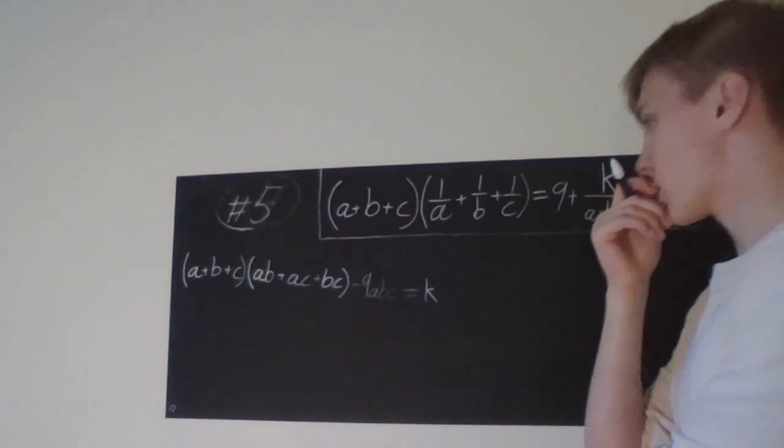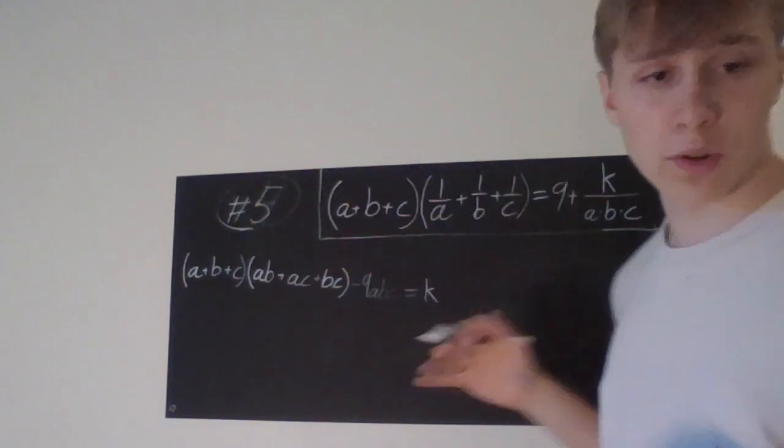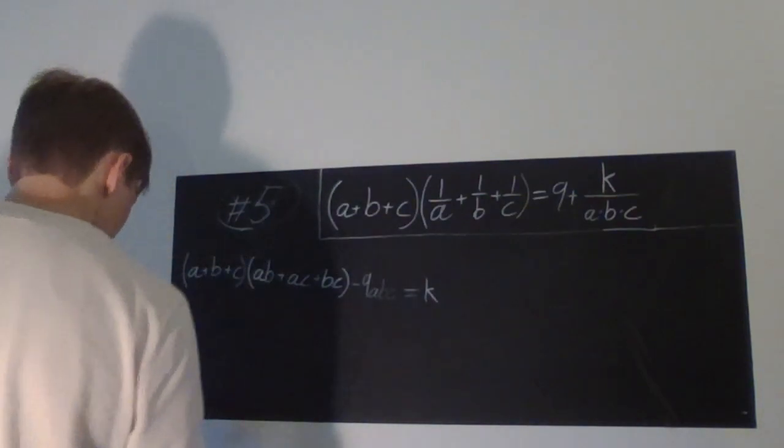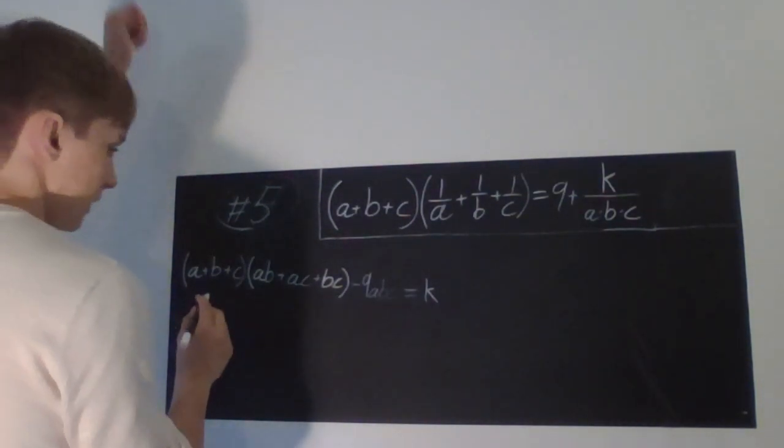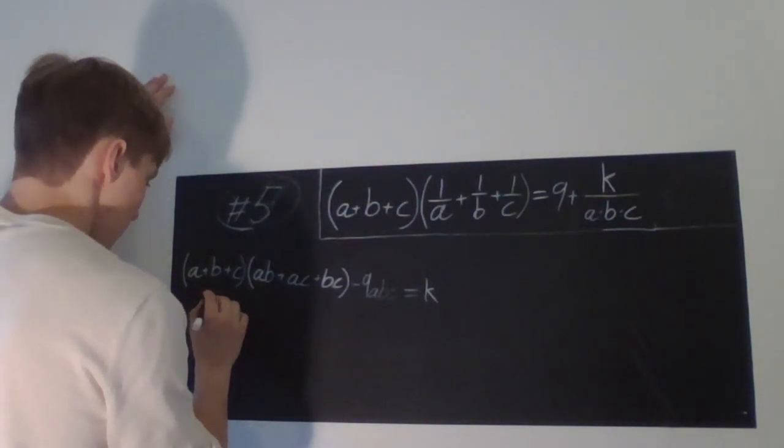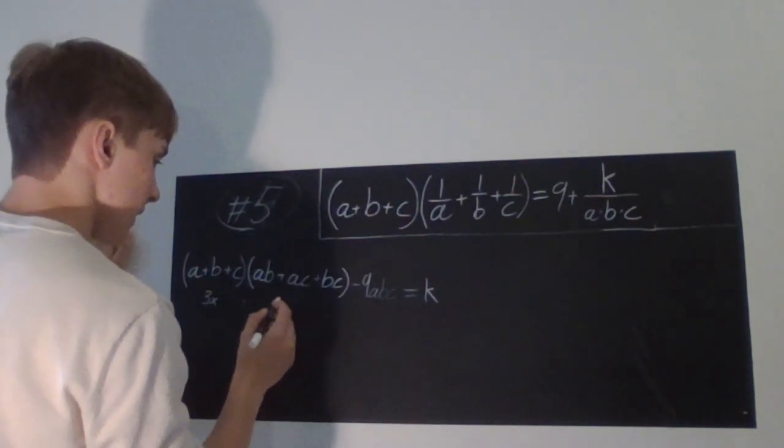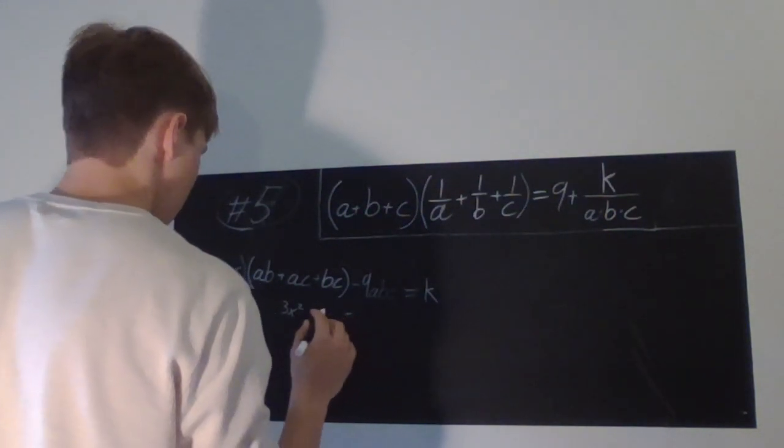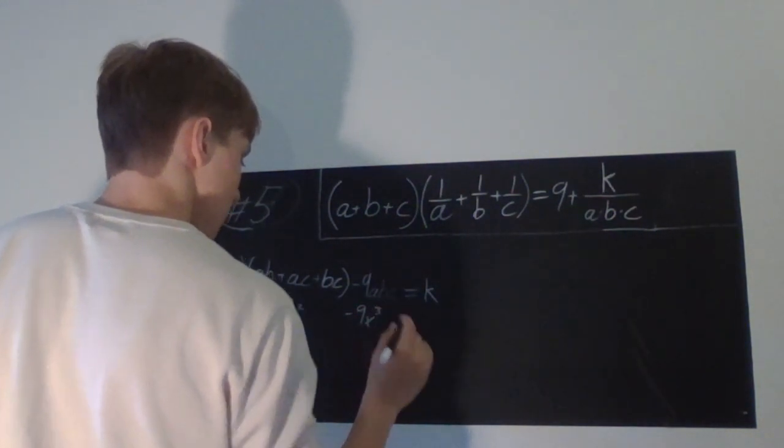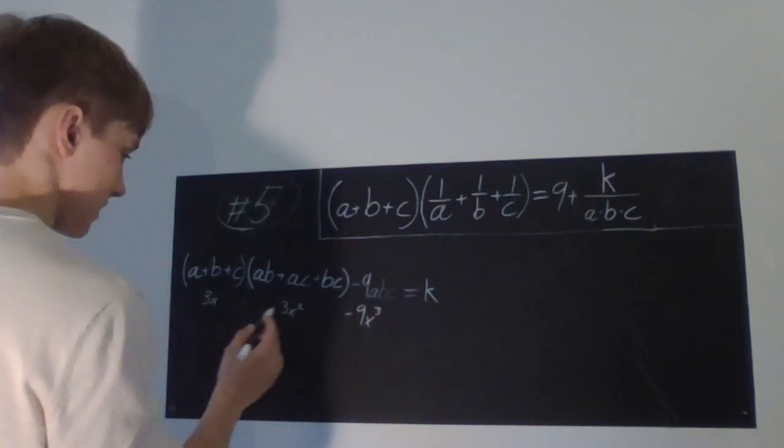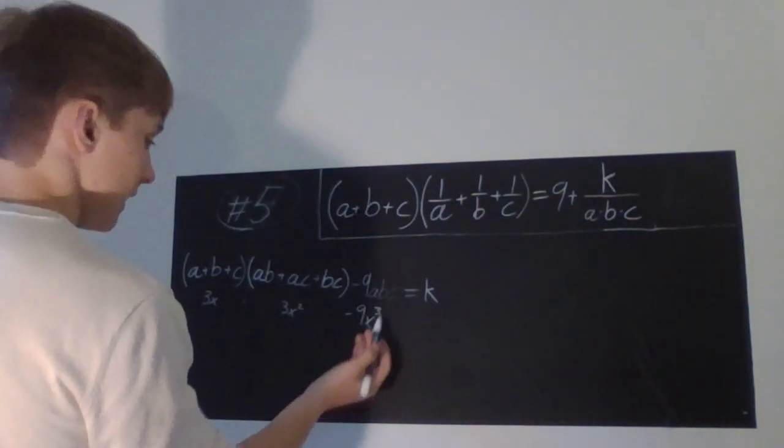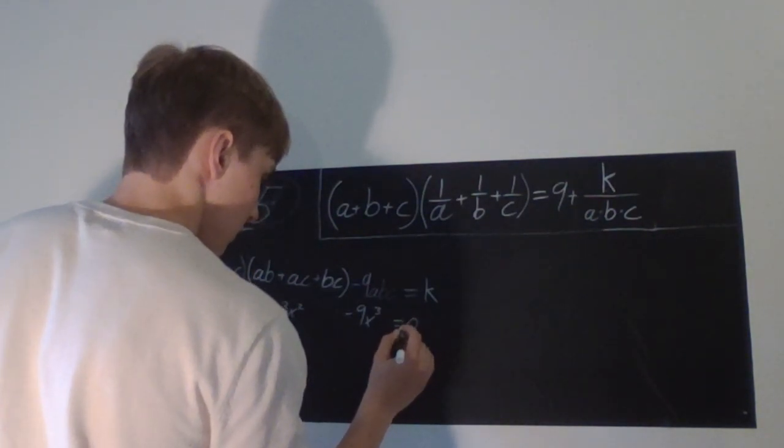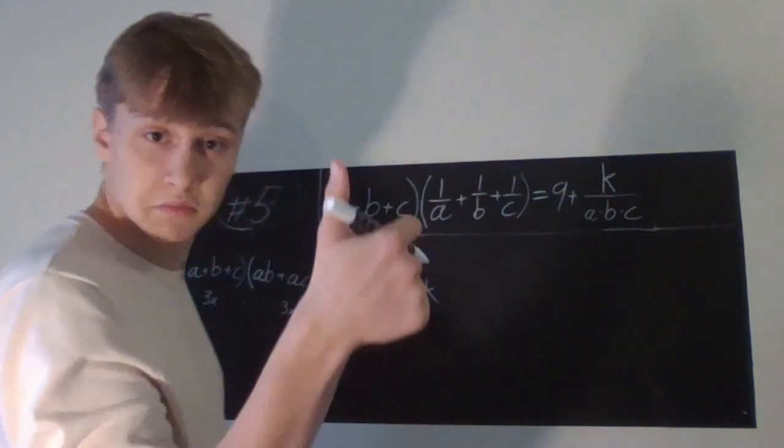So ab plus ac plus bc minus nine abc is equal to k. So we'll just try the most simple answer. All of them are the same. What do you get then? Well, then you would get three x times three x squared minus nine x cubed, which is nine x cubed. So this is just equal to zero. So we have zero.